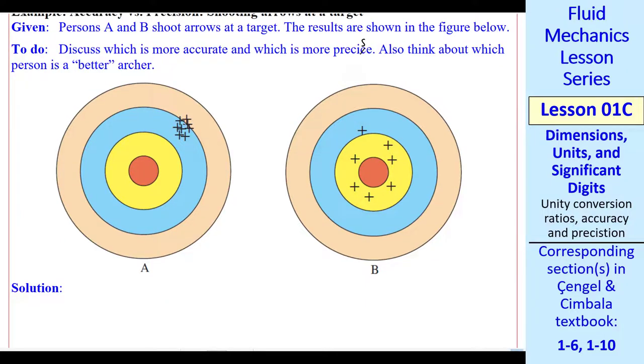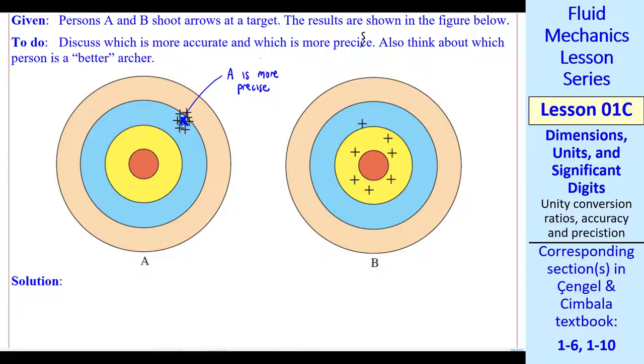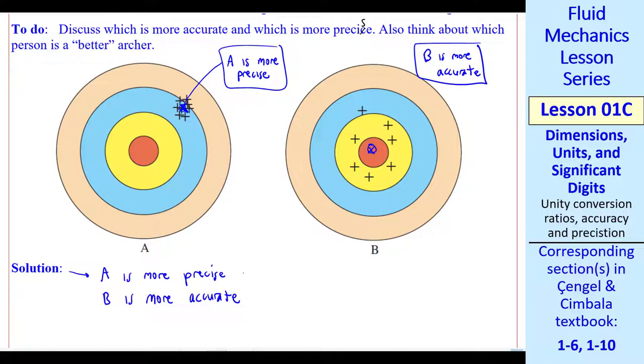If we average all these shots, the average is somewhere in here. Thinking about our definitions, A is more precise. If we average all these shots from Person B, it's somewhere in the middle. Again, by our definitions, B is more accurate. A is actually not very accurate. It's pretty far from the bullseye. B is not very precise, since there's a lot of scatter. But the average is in the bullseye, so B is more accurate. So A is more precise and B is more accurate.